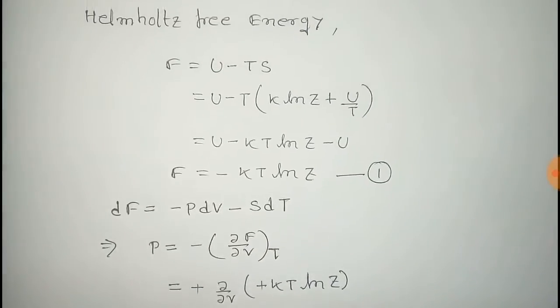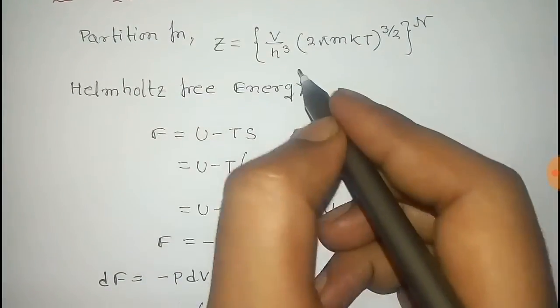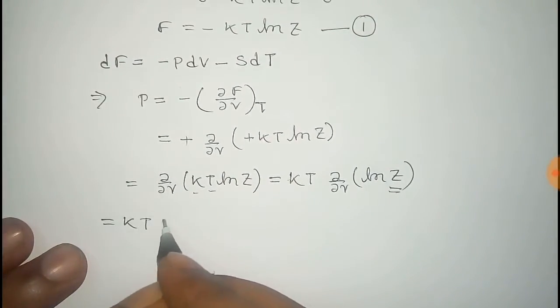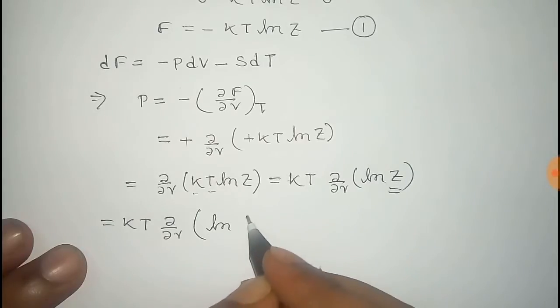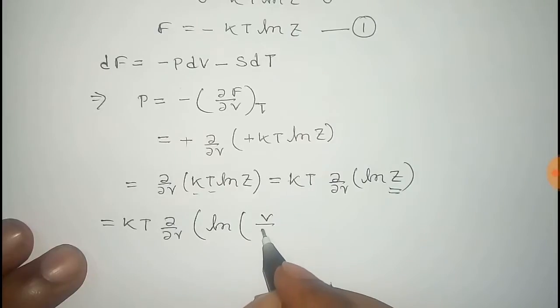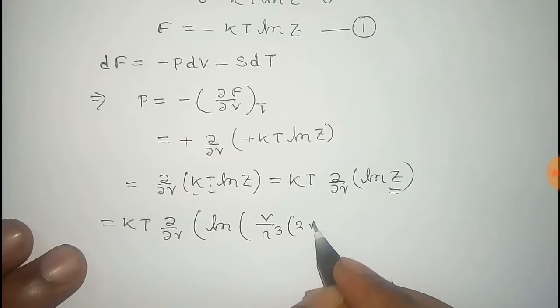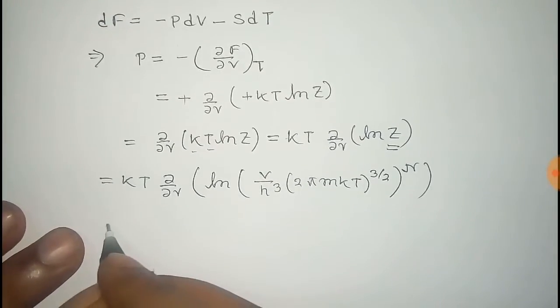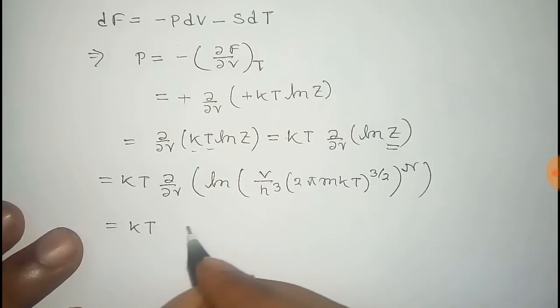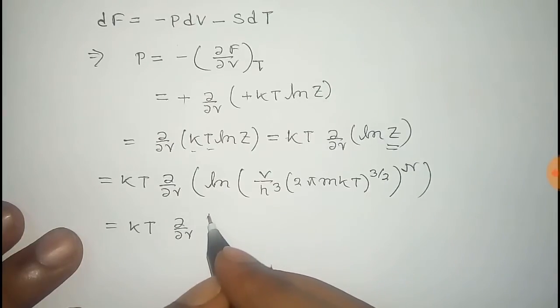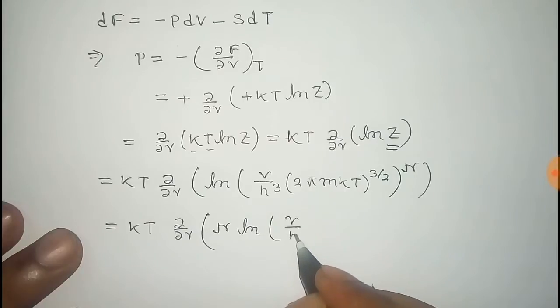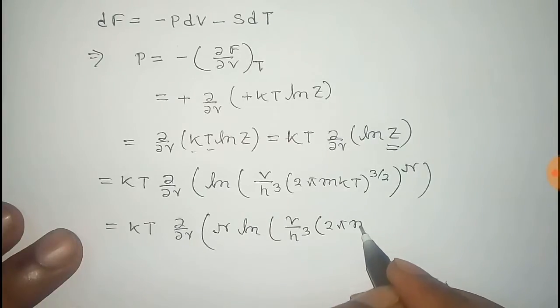We have to put the value of Z there, so we just put Z equals V over h cubed times 2 pi m k T to the power 3/2, whole to the power N. This N on the power comes before the logarithm, so this is N logarithm of V over h cubed times 2 pi m k T to the power 3/2.